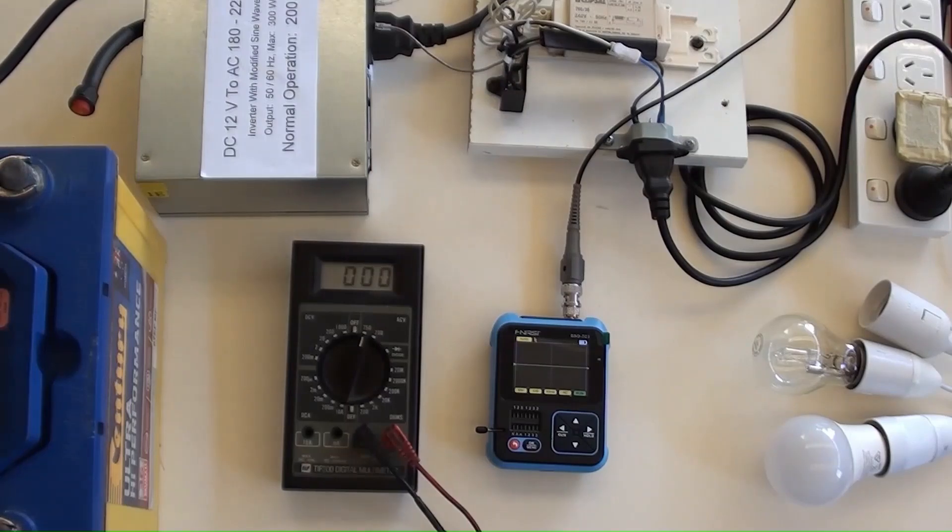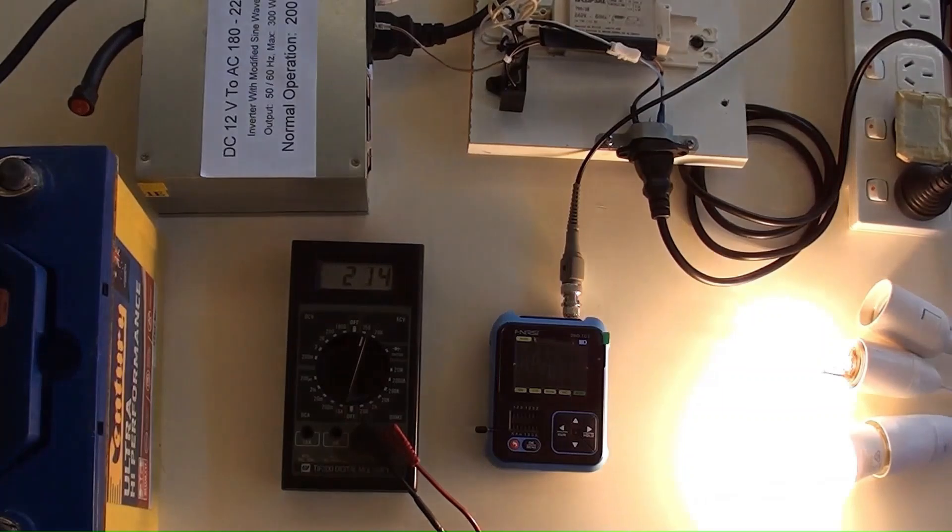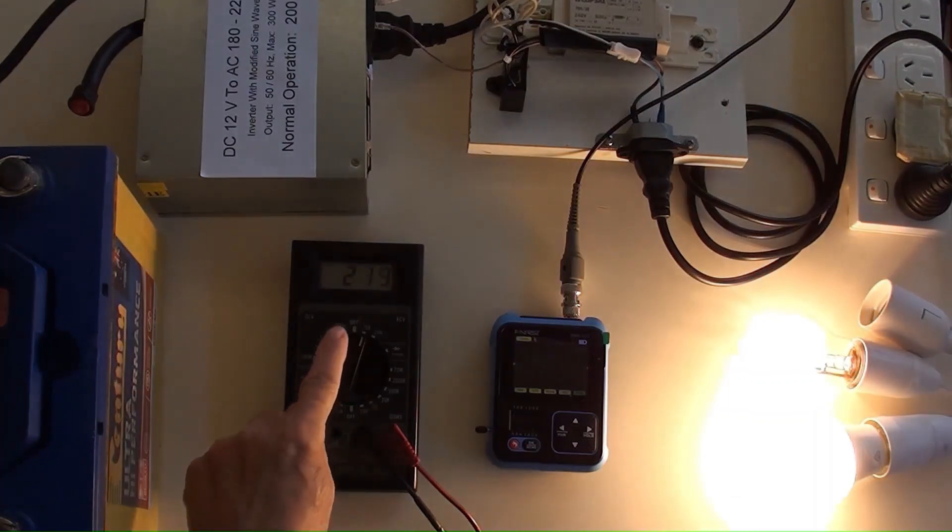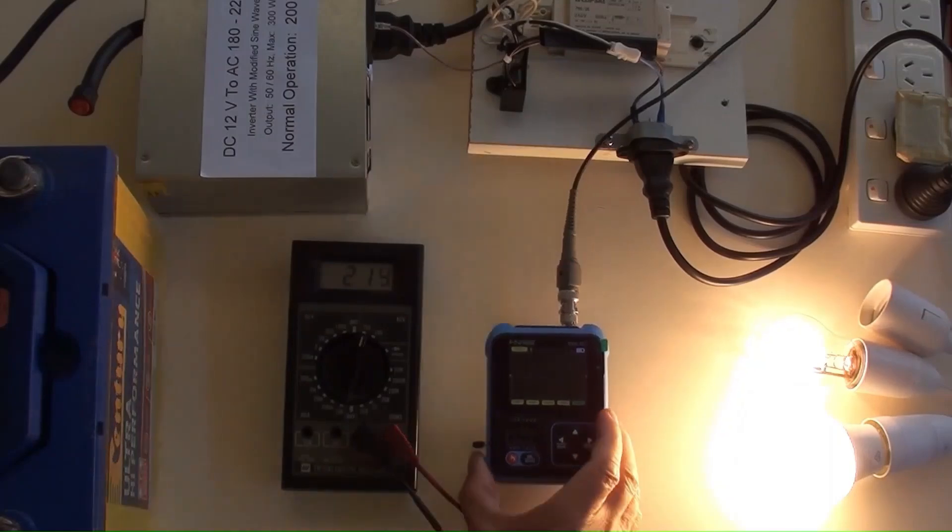Finally connecting the battery. Switch the DC power on. The bulbs are lighting. The multi-meter indicated the output of AC 215 volt, and the mini oscilloscope has indicated the sine wave.